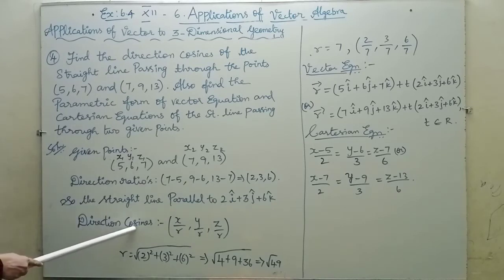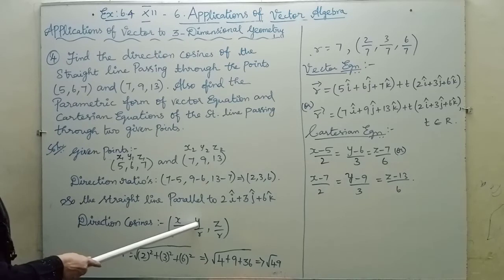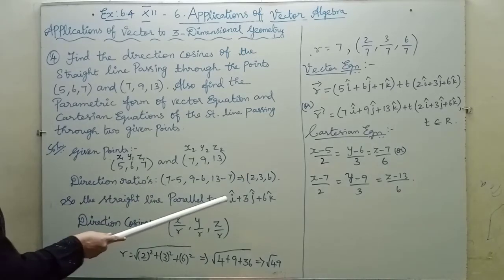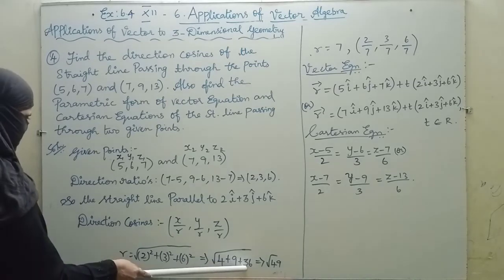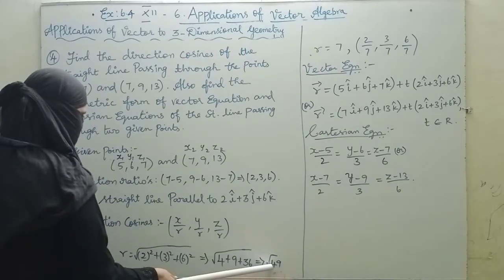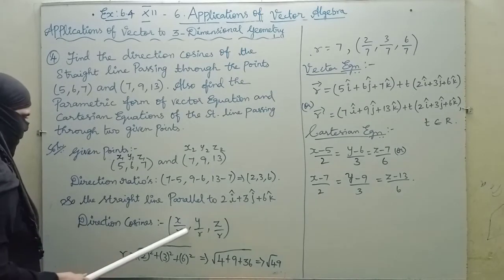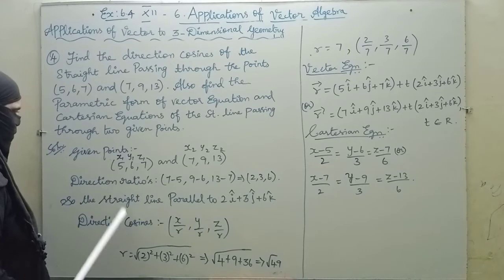Next, the direction cosines. The direction ratios are (2, 3, 6). So r equals the square root of x squared plus y squared plus z squared, that is root of 2 squared plus 3 squared plus 6 squared, equals root of 4 plus 9 plus 36, equals root 49, equals 7. So the direction cosines are 2/7, 3/7, 6/7.